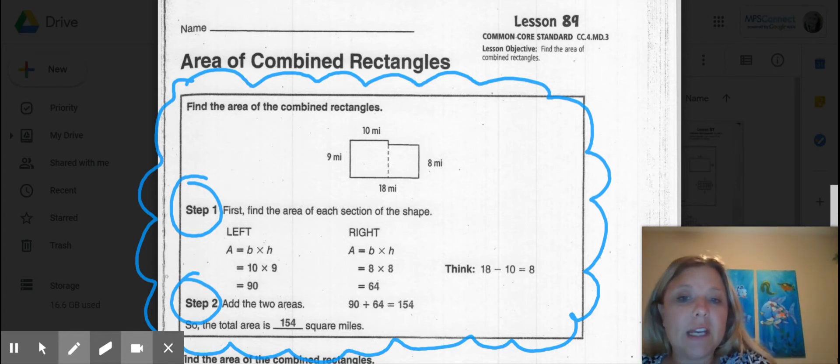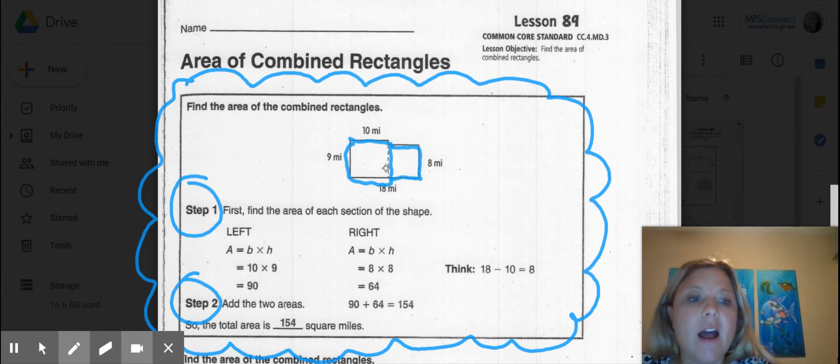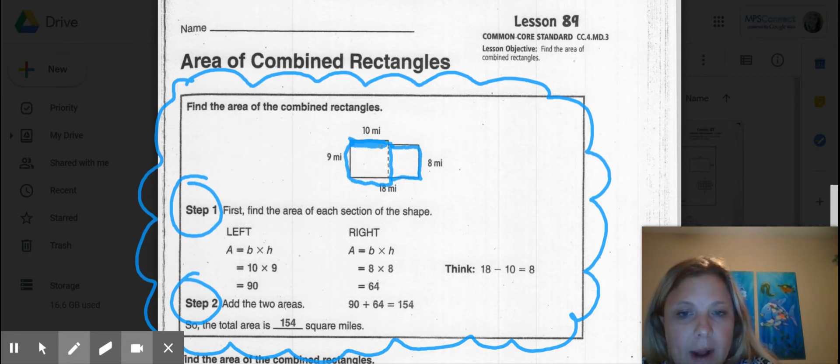Step one, you are going to figure out the area of the first shape and then you are going to figure out the area of the second shape. So the first shape is 10 miles this direction and it's nine miles this direction. Now, what we know about areas, we multiply the two numbers together. That's how they got the 90, but we're not done yet.